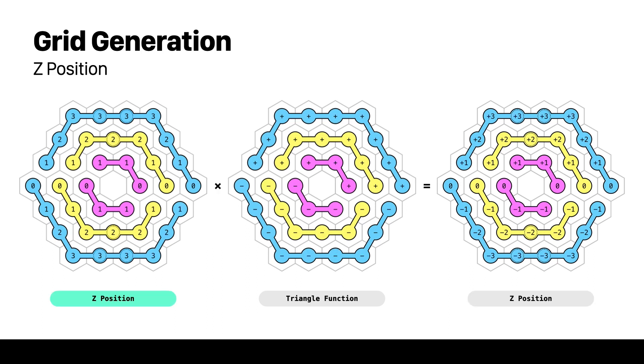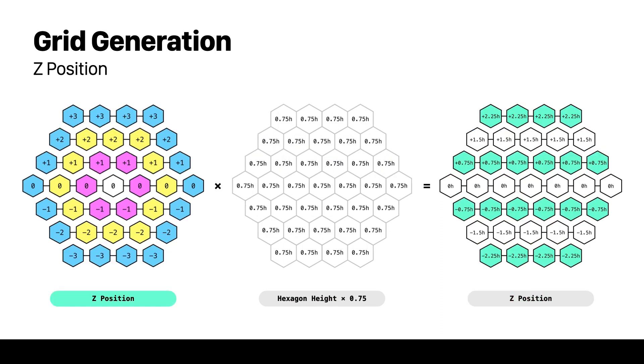Almost there. Now we need to take care of the sign and for that we will use the triangle function with a multiplier equal to the ring index times 3. We need to multiply those values with the ones from before and we got our sequence. We just need to multiply again with hexagon height times 0.75 and we get our z position values for all the points.